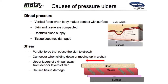So causes of pressure ulcers — this won't be a surprise to all of you here. You've got the body weight moving through the bone, the weight of the skeleton moving through the tissues, compressing the skin, and then the interface surface moving up. So you get compression of tissues with this one. It restricts the blood supply and cuts down the oxygen as we've already mentioned. Shear is slightly different.